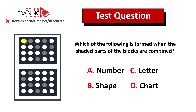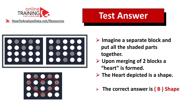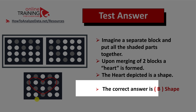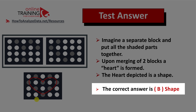Did you figure out the answer? Let's continue to see if we can solve this challenge together. The best way to solve these types of questions is to imagine a new block and understand what is formed when all the shaded circles are merged together from the two original blocks. Upon merging, you will see that a heart is formed, which is represented in the third block. And heart is a shape. So the correct answer here is choice B, shape.